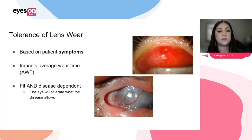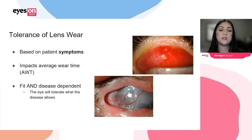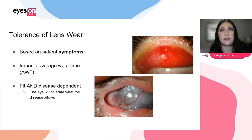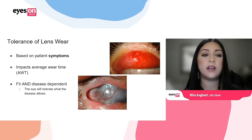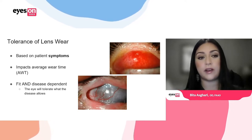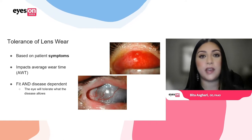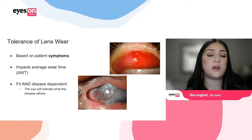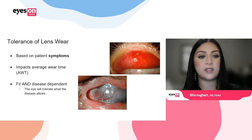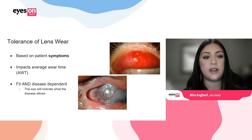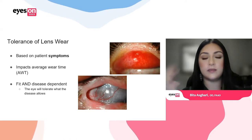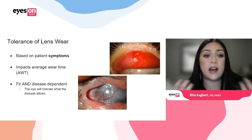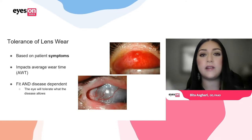Tolerance of lens wear is really based on patient symptoms and is often quantified by their average wear time. When a patient says they can only wear the lens six hours a day because their eye gets uncomfortable, that's tolerance of wear limited by something — and it can be limited by the fit or by the disease. I always tell patients upfront when they ask how many hours they'll wear the lens: I don't know yet, because the eye will tolerate what the disease allows it to tolerate.